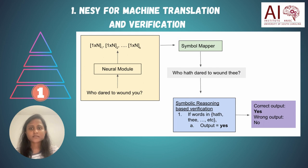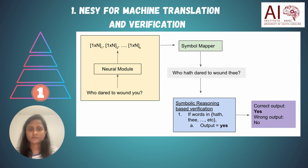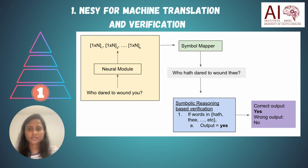First, we elaborate on the simplest case: machine translation from a source language to a target language. We experimented with English to Shakespeare English translation. In the given figure, we propose an architecture for this layer which includes three main components: a neural module, a symbol mapper, and a symbolic reasoner or executor. The input is an English question which goes to the neural module, producing intermediate representations. These are transferred to the symbol mapper which outputs a symbolic representation, which then goes to the symbolic reasoner that generates the answers.